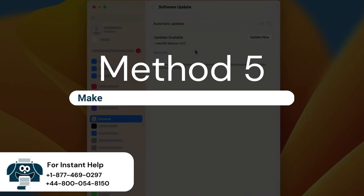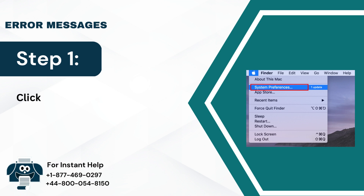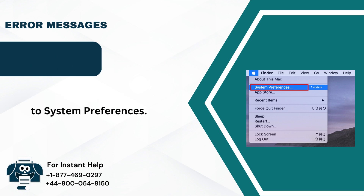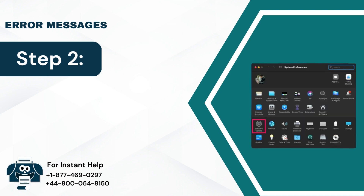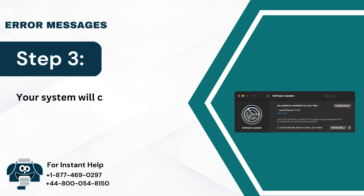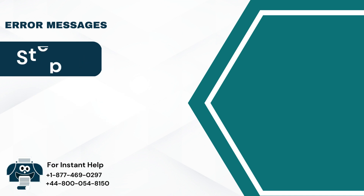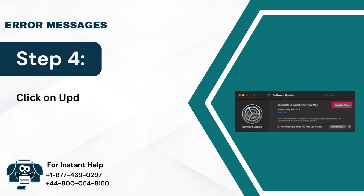Method 5: Make sure that you have the latest software. Step 1: Click on the Apple menu and go to System Preferences. Step 2: Select Software Update. Step 3: Your system will check for updates; if available, you will be able to install it immediately. Step 4: Click on Update Now to update to the latest version.